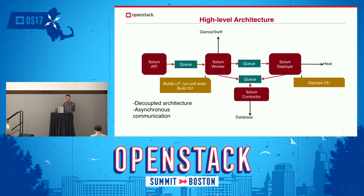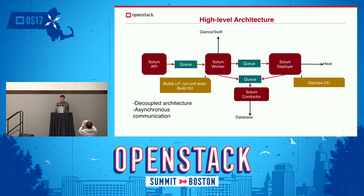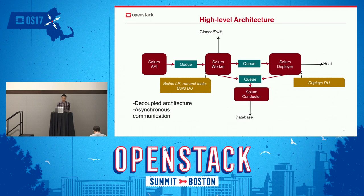I will now introduce the architecture of Solom. Like all OpenStack projects, Solom has a REST API, the Solom worker, and the Solom deployer. We also have the CLI and the Dashboard. A user can use the CLI or Dashboard to send a request; the Solom API receives the request and passes it via a message queue to the Solom worker, which then creates tasks and uses a RabbitMQ queue to proceed.